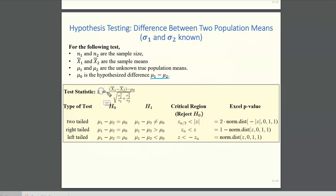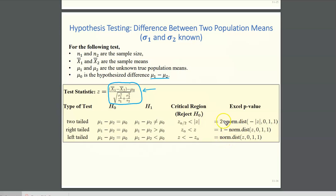Here's the test statistic and how we calculate it. We take the difference of the sample means, subtract the hypothesized difference mu0, and then divide by the square root of the sum of the population variances each divided by their respective sample size. Once you calculate this test statistic, you can calculate the p-value using one of three Excel commands depending on whether it is a two-tailed, right-tailed, or left-tailed test.